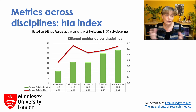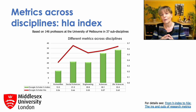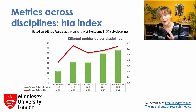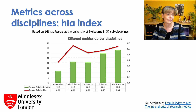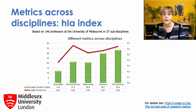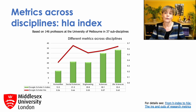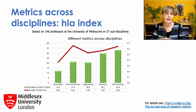For the social sciences, the change was even more dramatic, going from a factor of five — that means citations in the life sciences being five times as high as in the social sciences — to being equal to the life sciences and higher than engineering and the sciences.